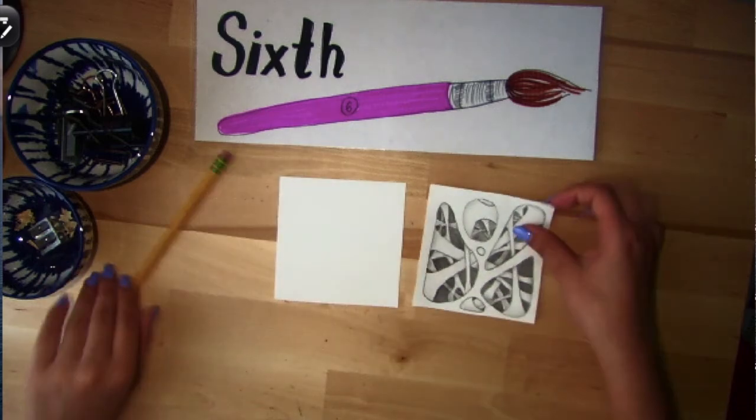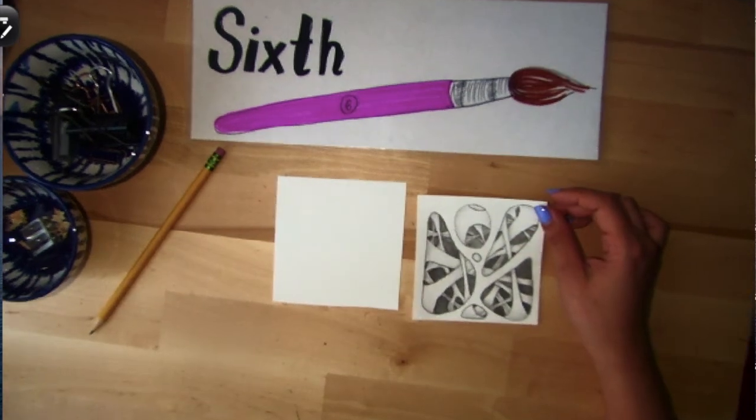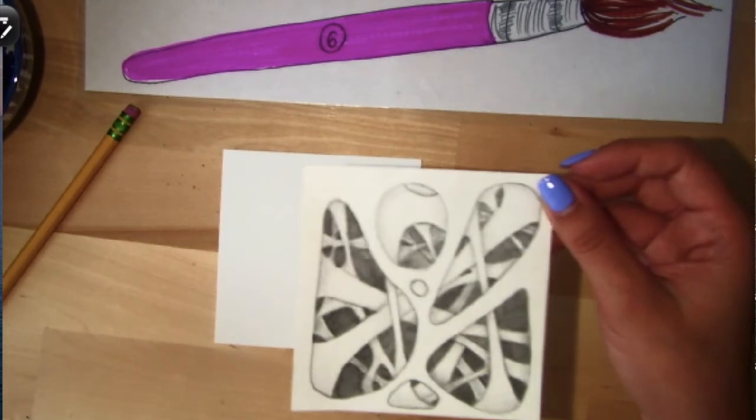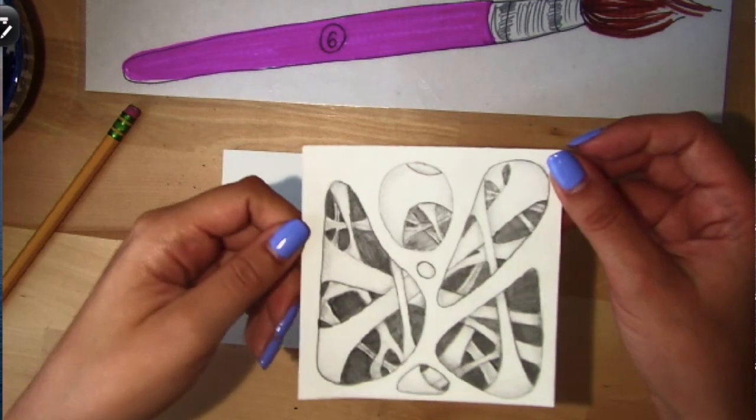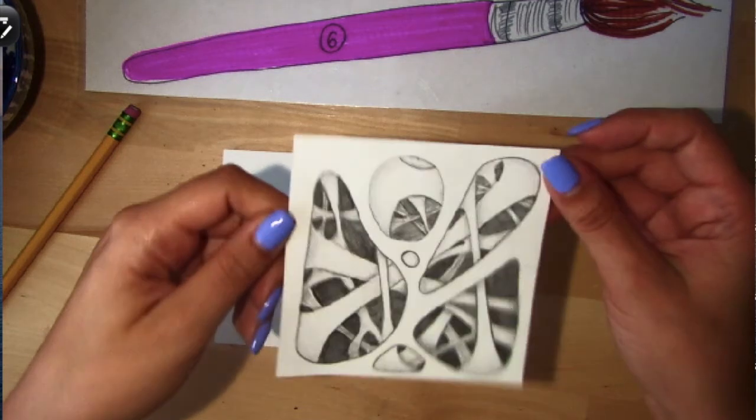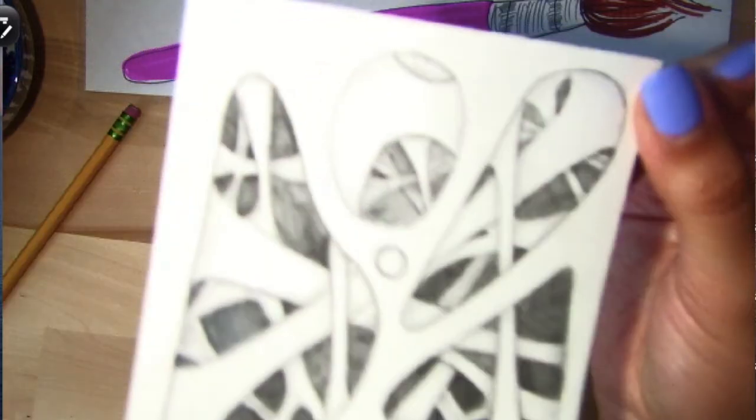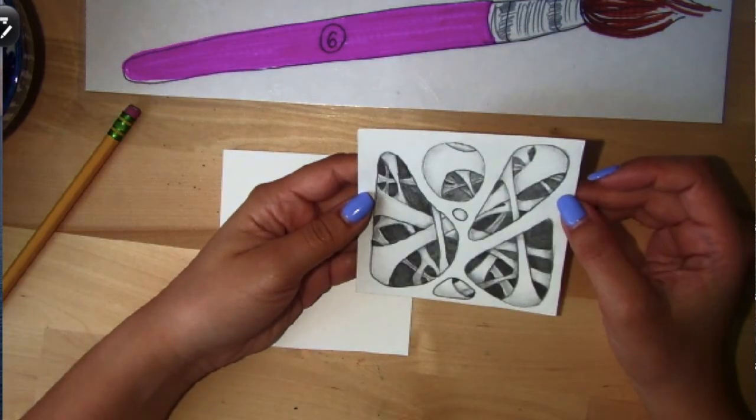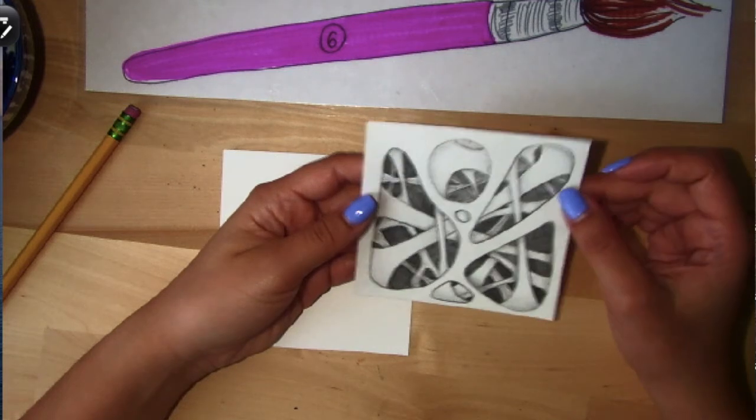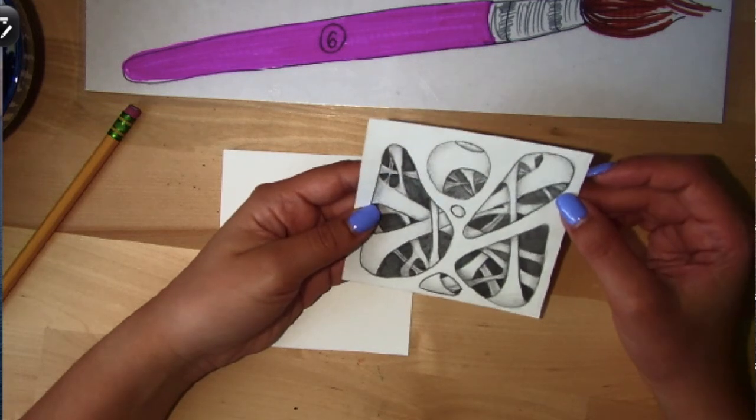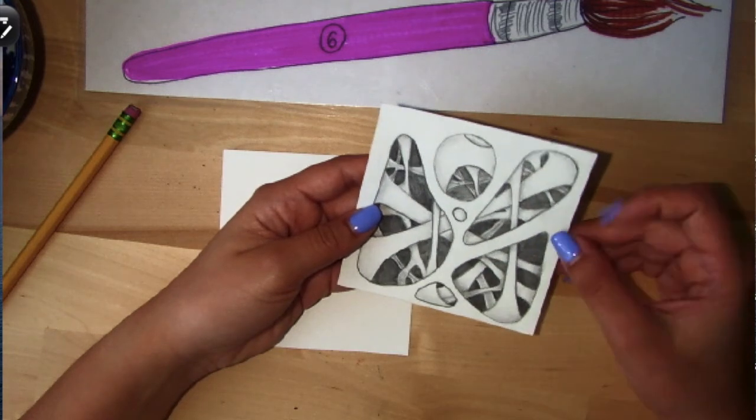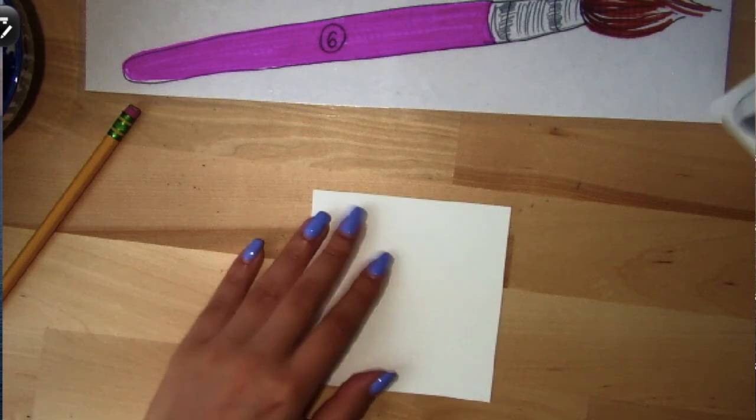So this is our project. I know it's a little difficult to see because of the quality of the camera, but I hope it focuses enough where you can see the value. There's a lot of value in this drawing. I'll take a picture and upload it to Google Classroom so you can see all the different kinds of value because it's not just white and black. So we're going to get started on this project.